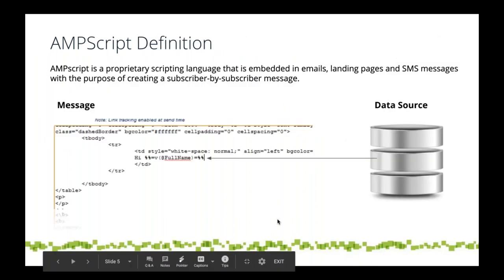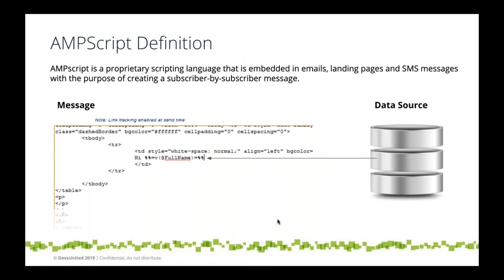Let's talk about AMPscript. The basic definition: AMPscript is a proprietary scripting language you can use to create highly personalized experiences within Marketing Cloud. At the beginning there were other options such as Einstein or Content Builder to extend the platform, but you had to rely a lot on scripting languages. When AMPscript came along, it was a really powerful tool for marketers to create personalized messages and it's still very useful today for extreme and complex scenarios.